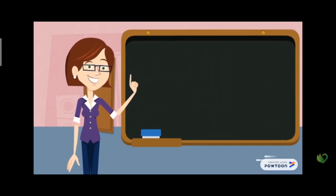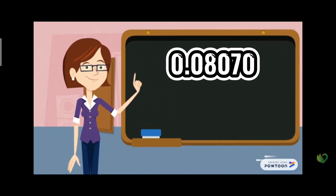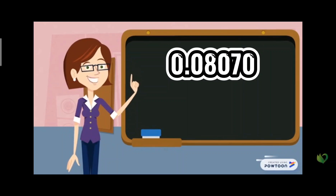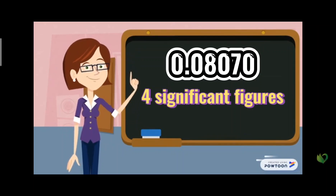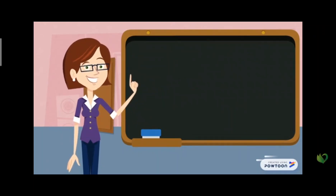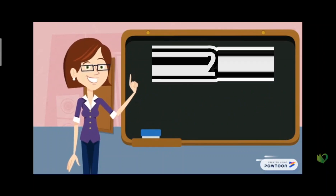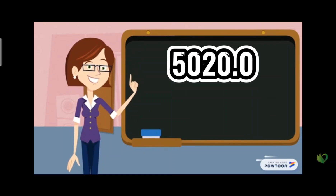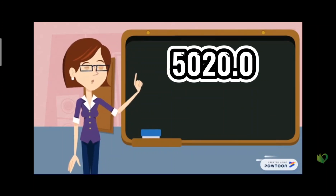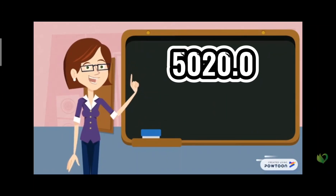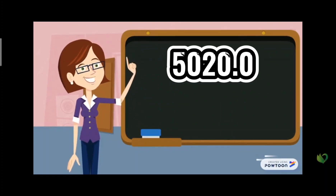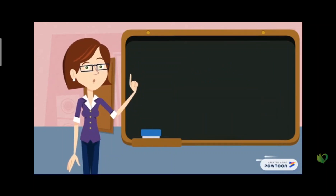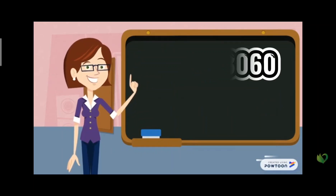For the next one, we do have a trailing zero which will be counted; the leading zeros will not be counted, so there are only four significant figures. For the next number, 5020.0, we have a decimal point so all the trailing zeros will be counted, and the zero between 5 and 2 is always counted, giving us a total of five significant figures.